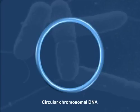The circular chromosomal DNA of bacteria must be compacted about 1000 fold to fit within a bacterial cell.